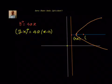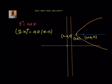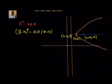Then the coordinates of the focus will be (h + a, k), and the coordinate of the point where the axis of the parabola meets the directrix is (h − a, k). The axis of the parabola is a line parallel to the x-axis, and the directrix is a line parallel to the y-axis.